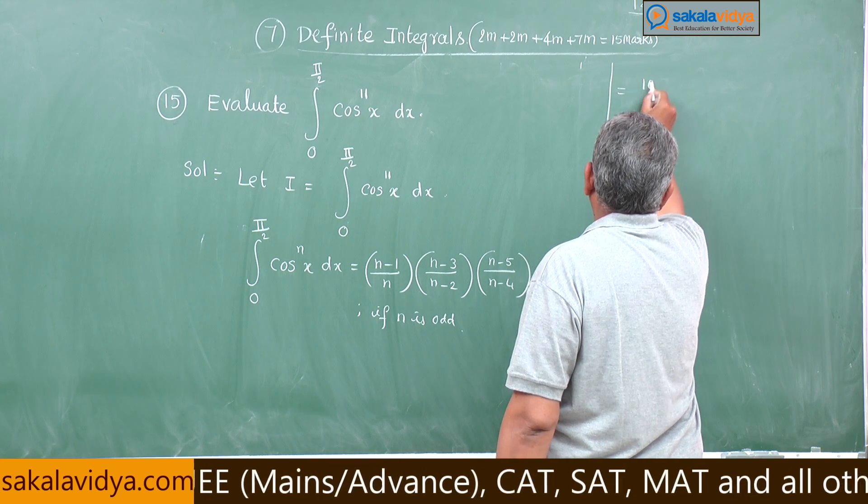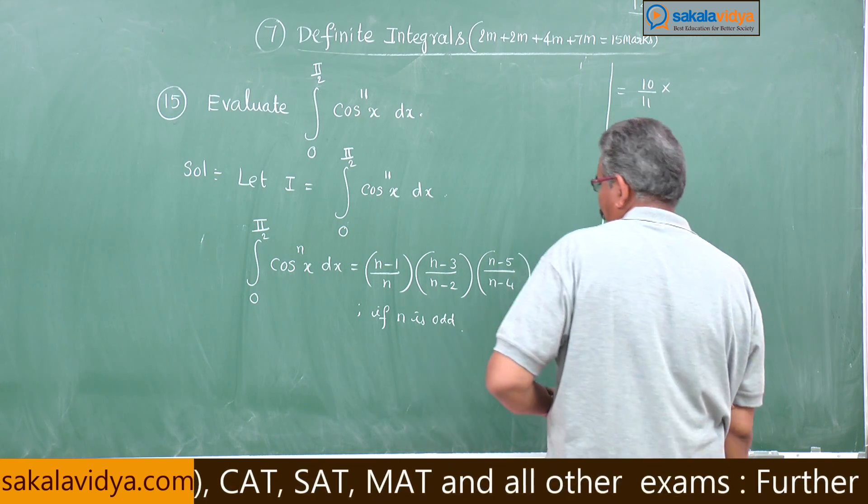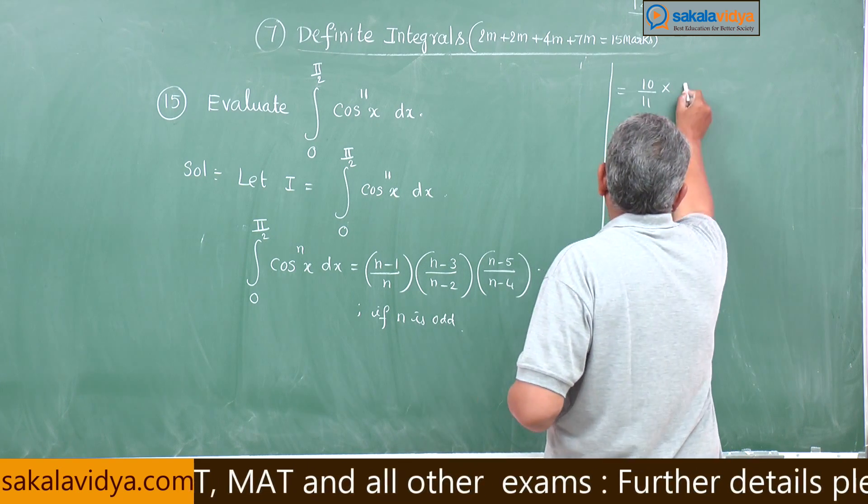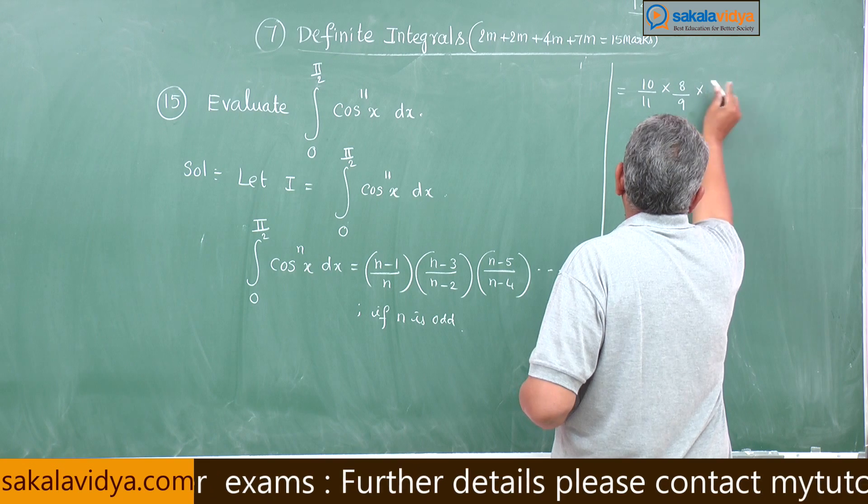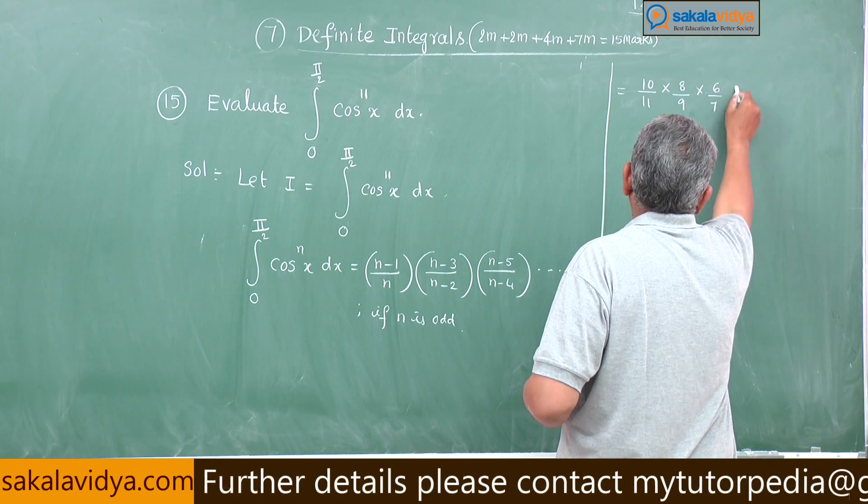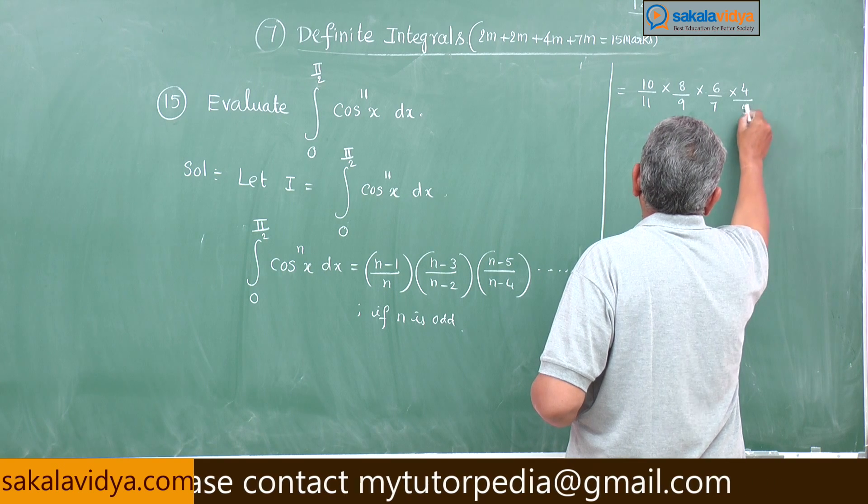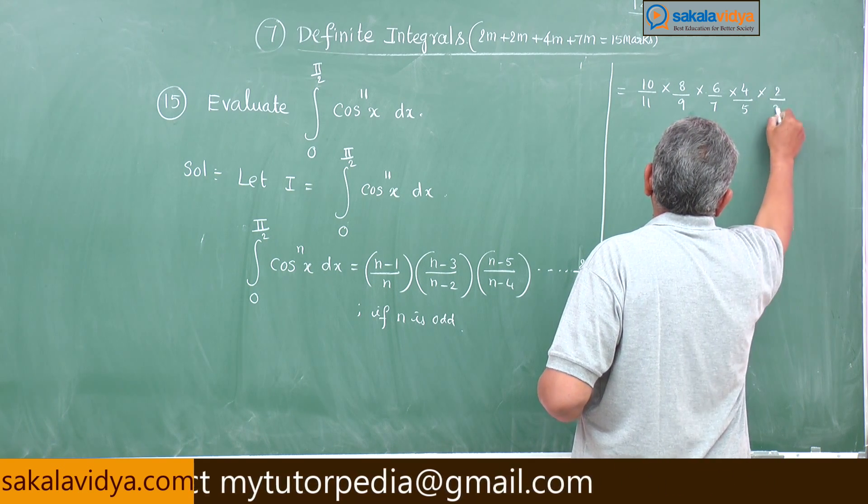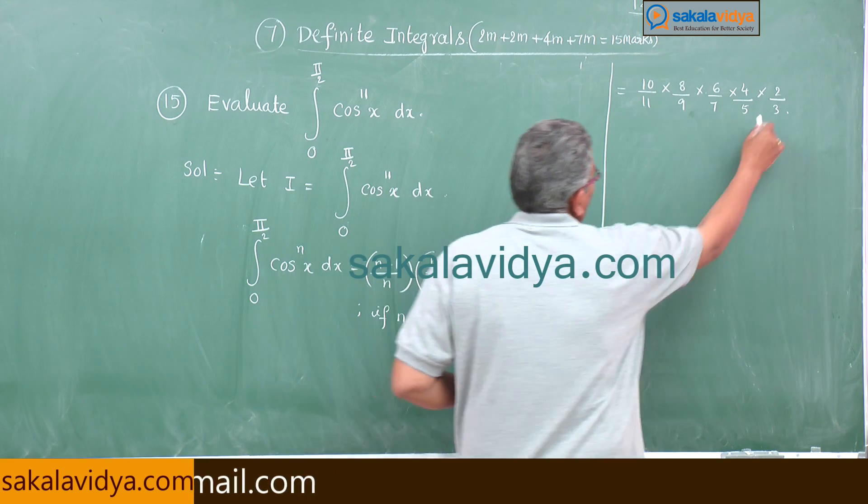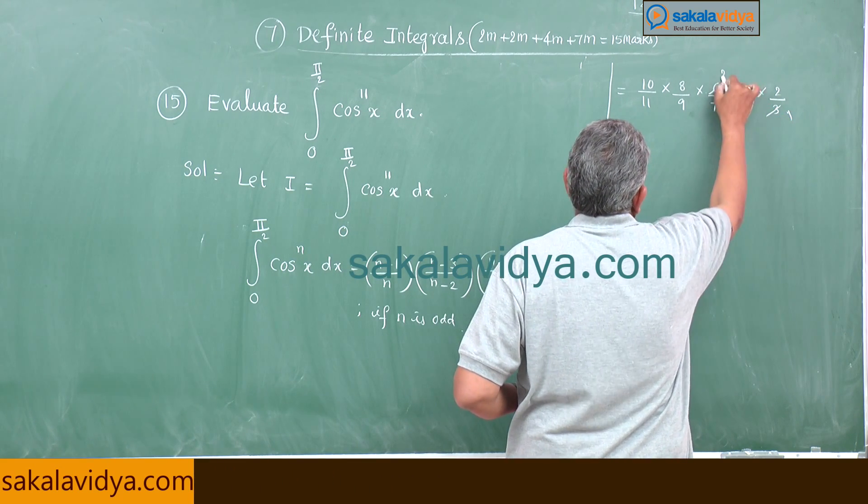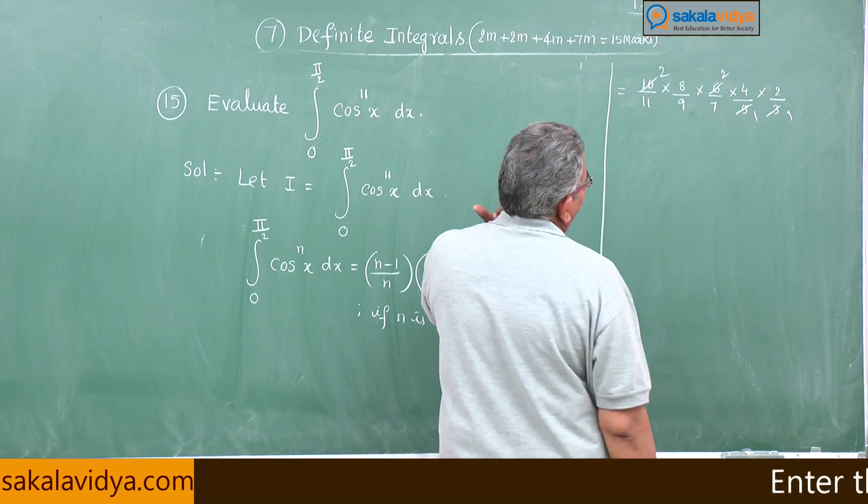10 by 11, this is 8 by 9, 6 by 7, 4 by 5, 2 by 3, it stops. Here 3 1, 3 1 3 2, 5 1, 5 1 5 2. Any cancellations, nothing now.